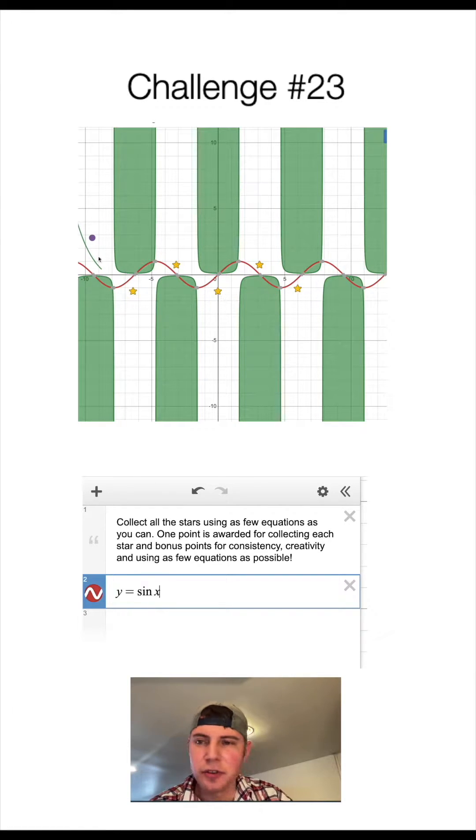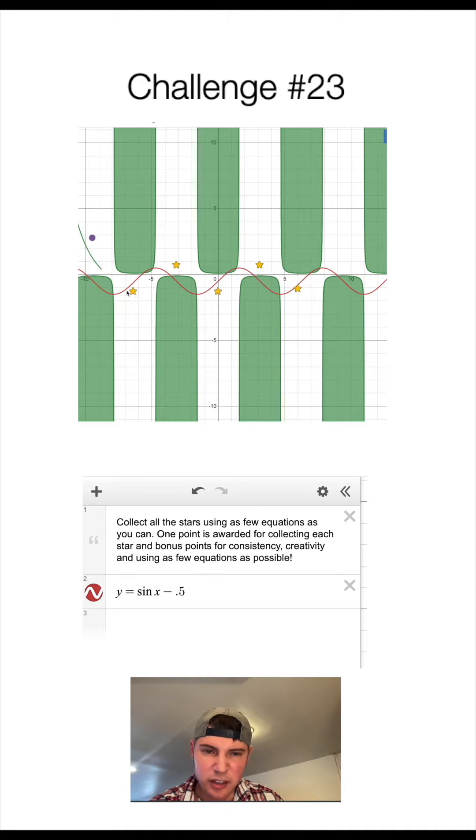First, this seems too high for these stars, so let's move it down a little bit. So on the outside, we'll subtract some number, and that'll bring the whole thing down. That looks a little too far to me, so I'm going to say 0.4.